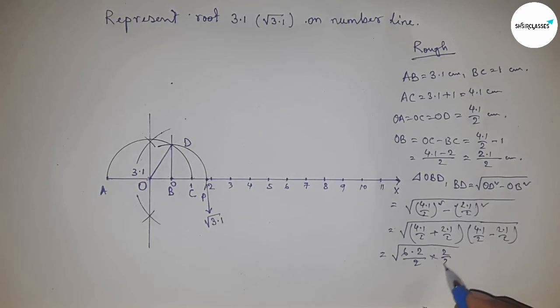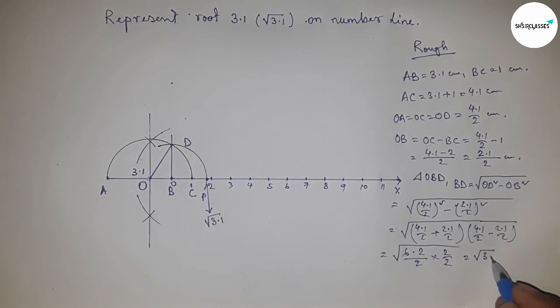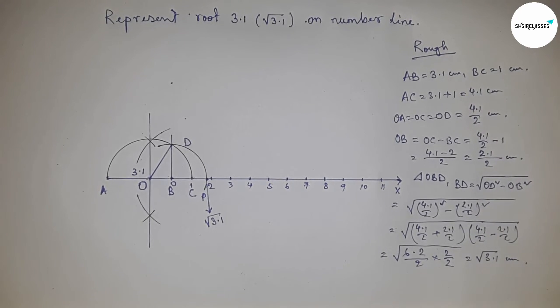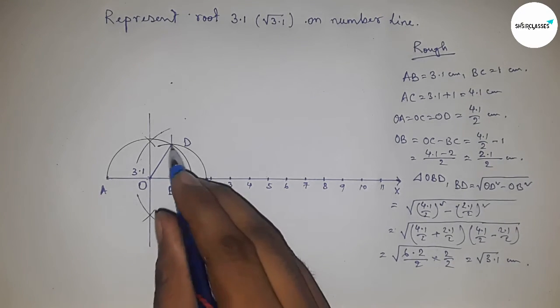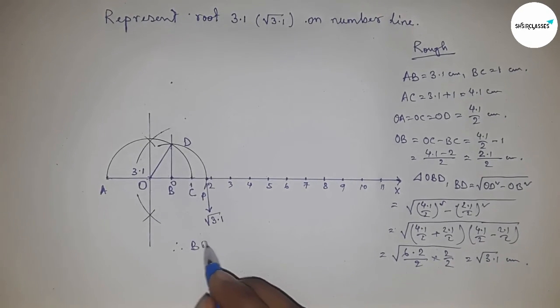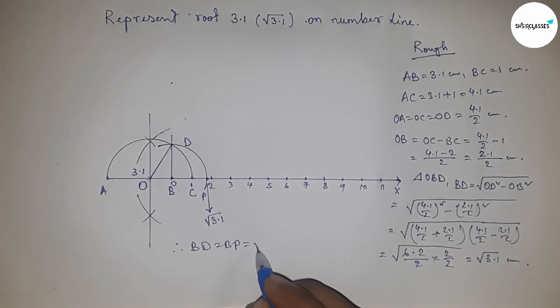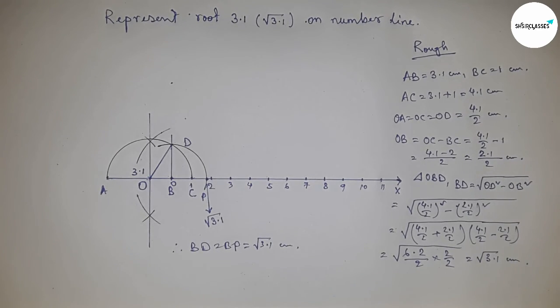This equals root 3.1 centimeters. Therefore, distance BD and BP are equal, so this equals root 3.1 centimeters. That's all. Thanks for watching. Please subscribe, like, and comment.